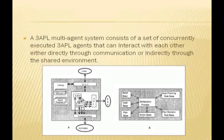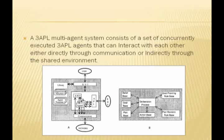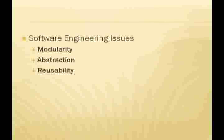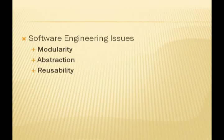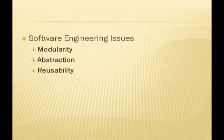Diagram B shows the different components in a single agent, and this includes beliefs and goals and other parts of the agent which are considered important. Other issues concerning 3APL are software engineering issues, and these are modularity, abstraction, and reusability.